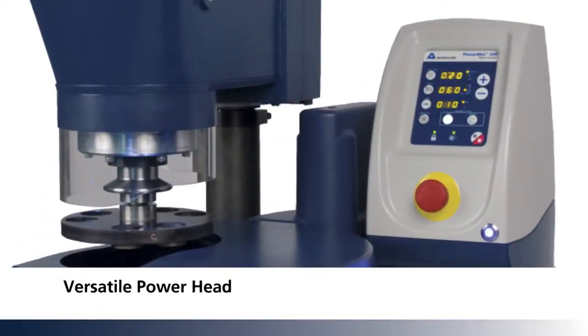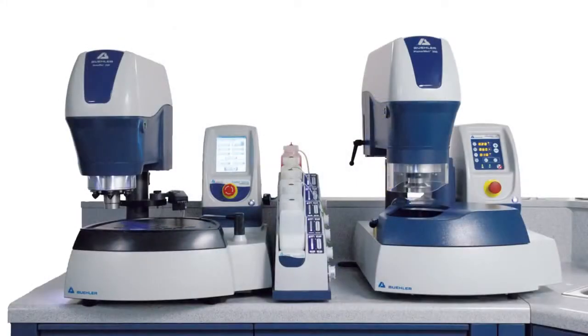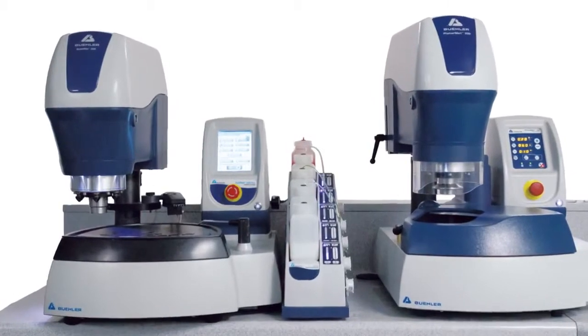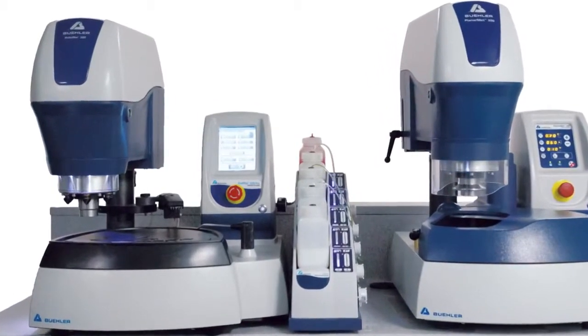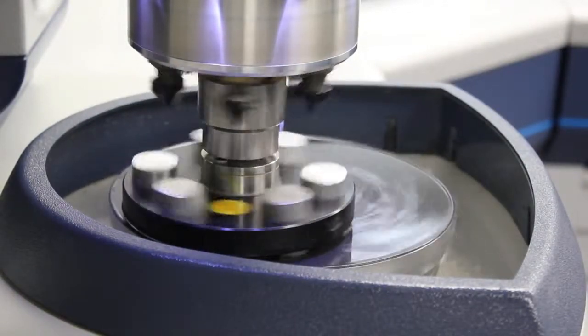The versatile power head, with variable force and head rotation, accepts the same central force specimen holders as the Acomet Automet Grinder Polisher, allowing additional preparation steps to be completed without transferring to a new holder.